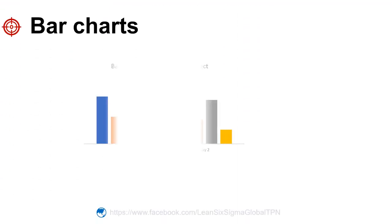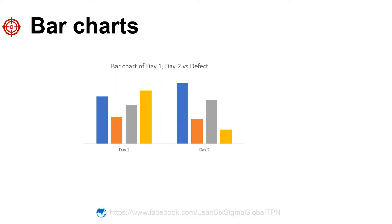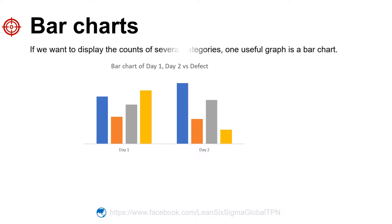If we want to display the counts of several categories, one useful graph is a bar chart. The type of defects is shown on the horizontal axis, and the frequency of defects is shown as a count on the vertical axis. For example, the number of defect C in day one is 58, whereas it is 65 in day two.